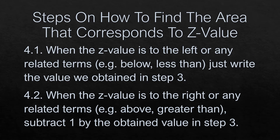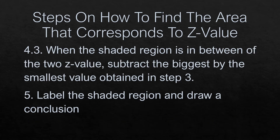There are three possible conditions that may arise. First, when the Z value is to the left, or any related term, just write the value we obtain in step 3. Second condition, when the Z value is to the right, or any related terms such as above or greater than, subtract 1 by the obtained value in step 3. The third condition is when the shaded region is in between two Z values — subtract the bigger value by the smaller value obtained in step 3.